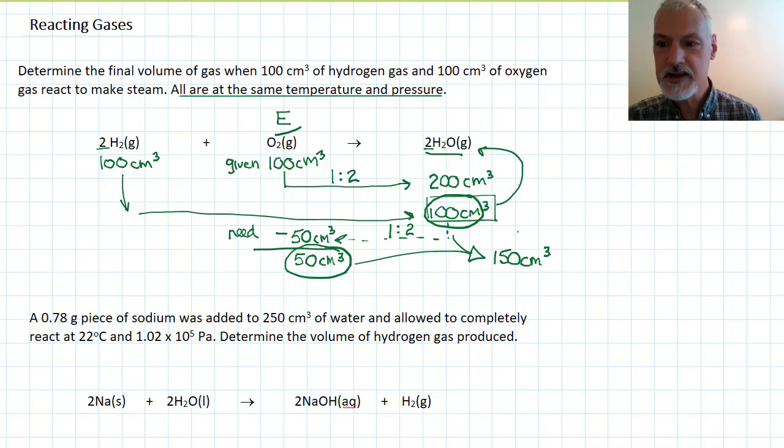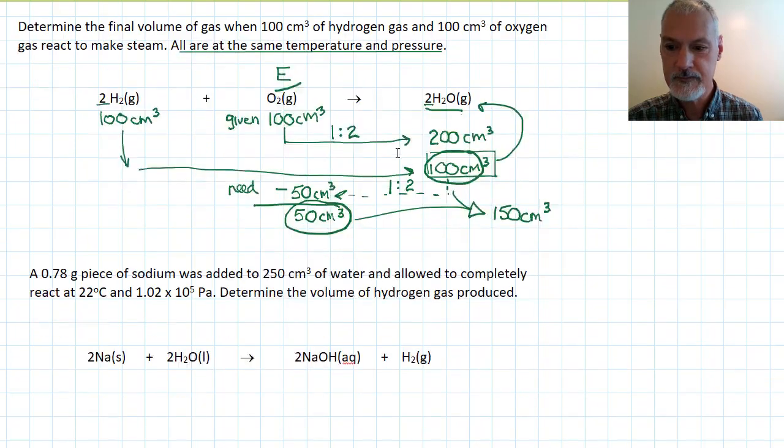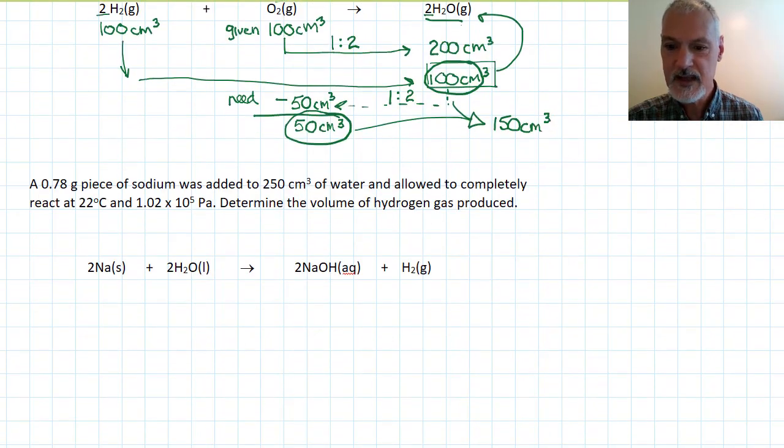So again, look for that particular line. All gases are at the same temperature and pressure, and you can employ this shortcut. In the second problem, I'm going to look at an experiment that many of you will have a chance to do, placing sodium in water. When you do that, you'll get certainly an amount of heat produced, but you'll also produce sodium hydroxide and hydrogen gas. My question is, what is the volume of this gas that you're going to obtain?